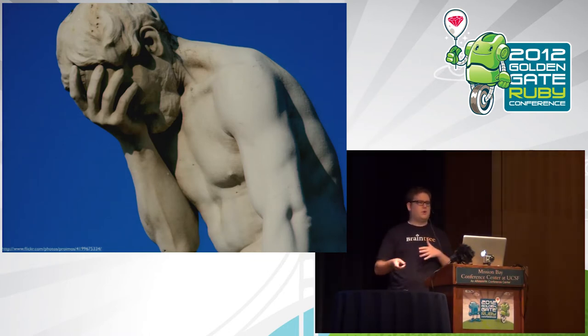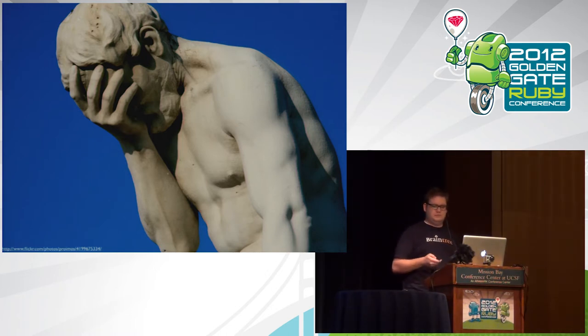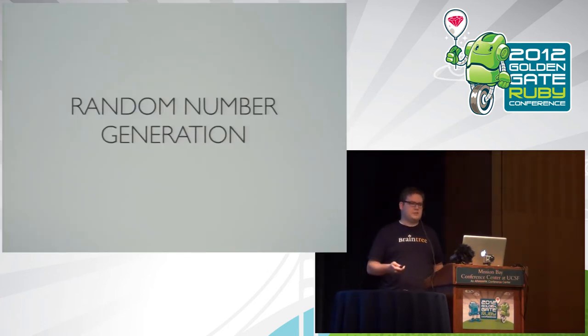Now let's talk about some places where crypto goes wrong. I've got four specific places we're going to talk about — just things developers commonly screw up. The first thing is random number generation.